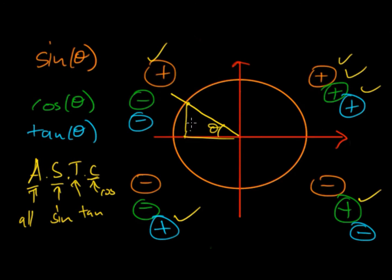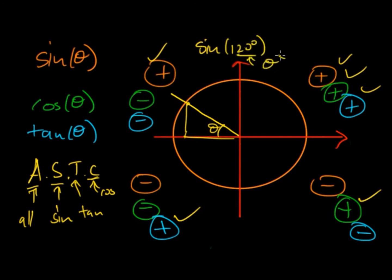This may seem confusing at first — both the magnitudes and whether values are positive or negative in the different quadrants, and how we can relate this to questions. In the next video I'll go through examples such as how to calculate sine of 120 degrees, or angles bigger than 90 degrees. These values are also useful when graphing, as the angle theta gets bigger than 90 degrees.